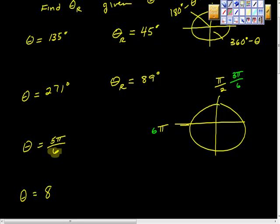So 5 pi sixth must be in here somewhere, isn't it? And what's the rule in radians here? Pi minus theta. So we'll get here 6 pi over 6 radians minus 5 pi sixth radians, and we have pi sixth radians is equal to our reference angle.